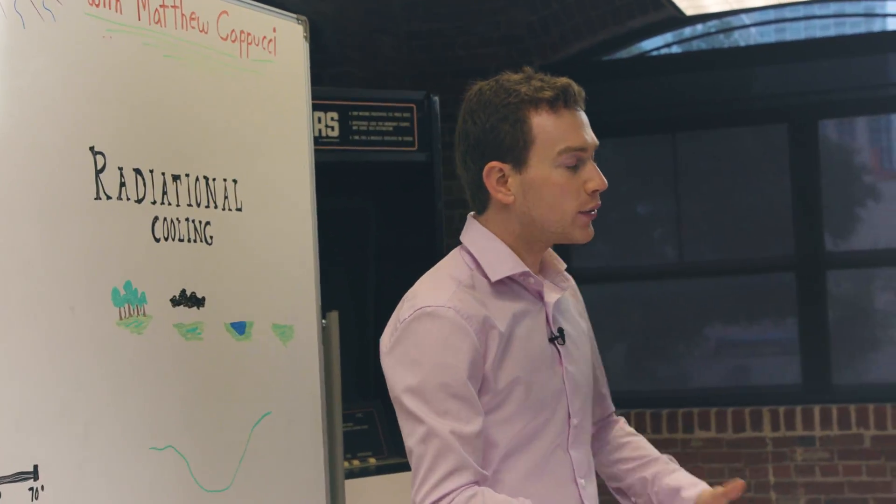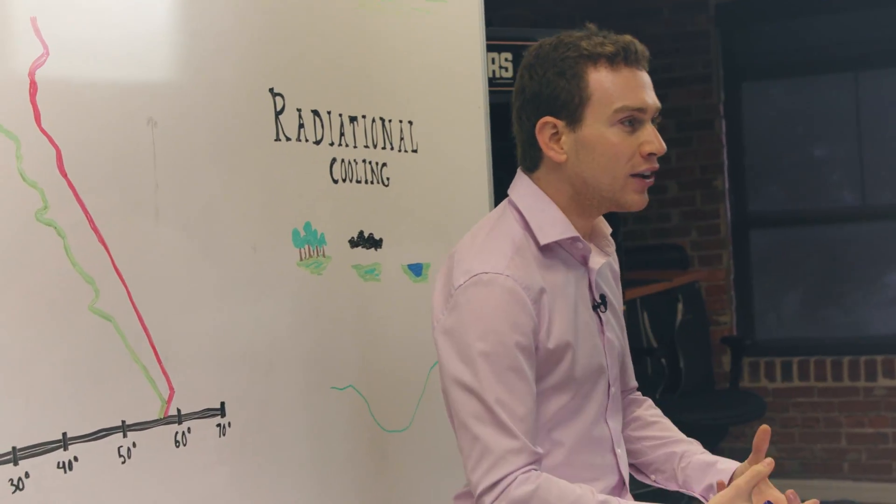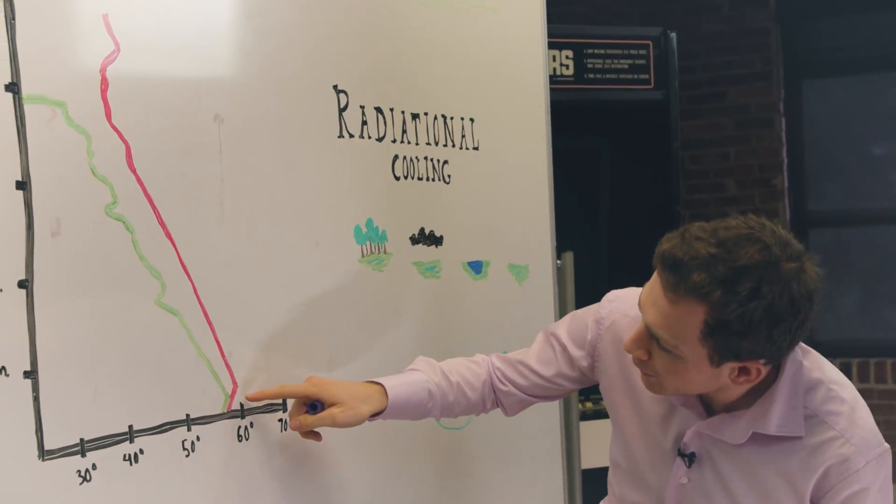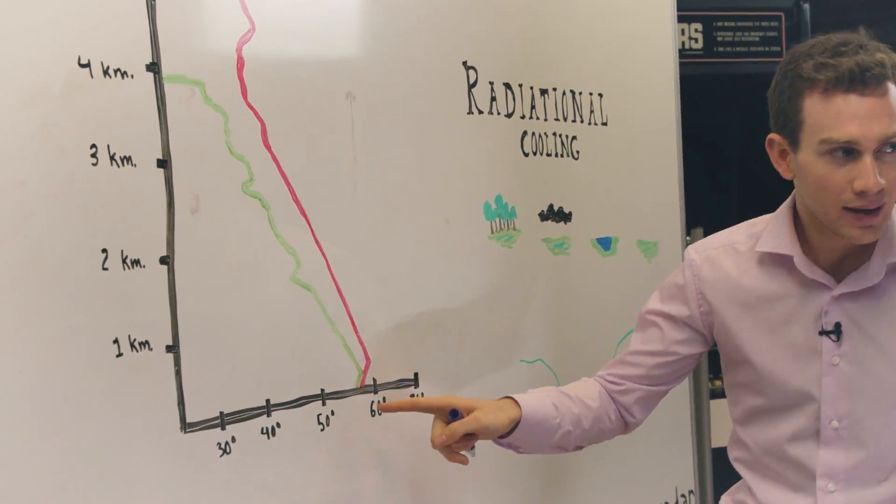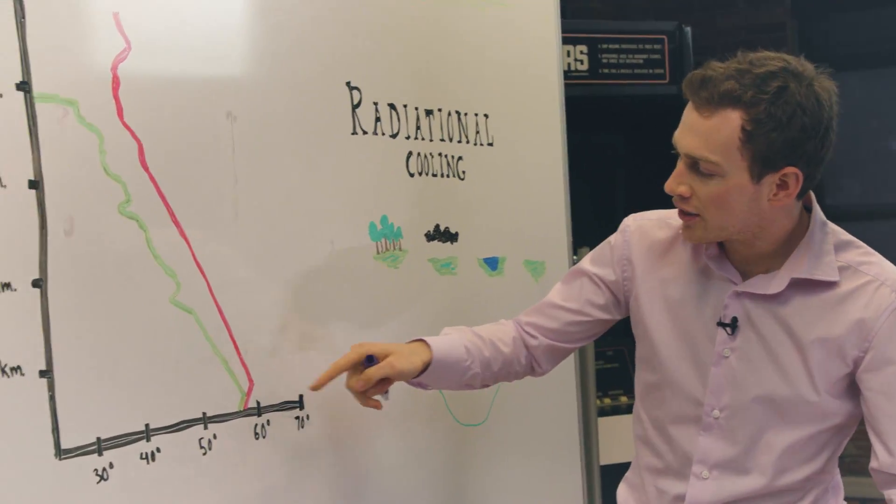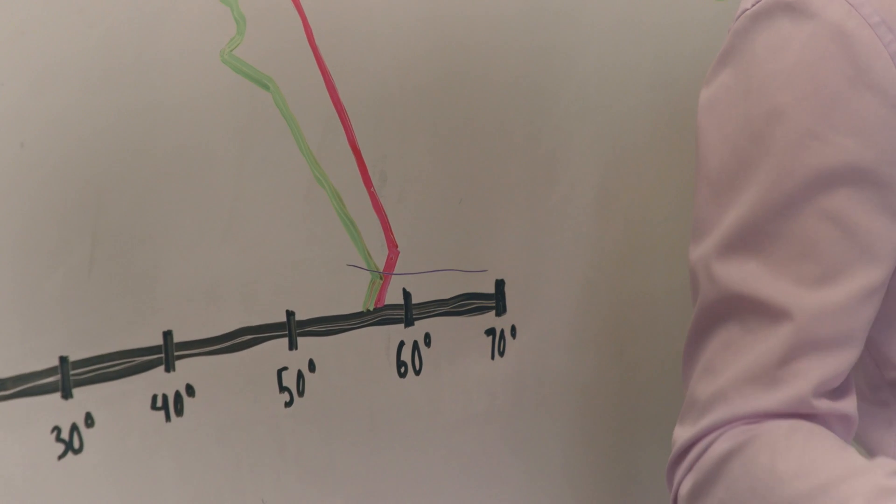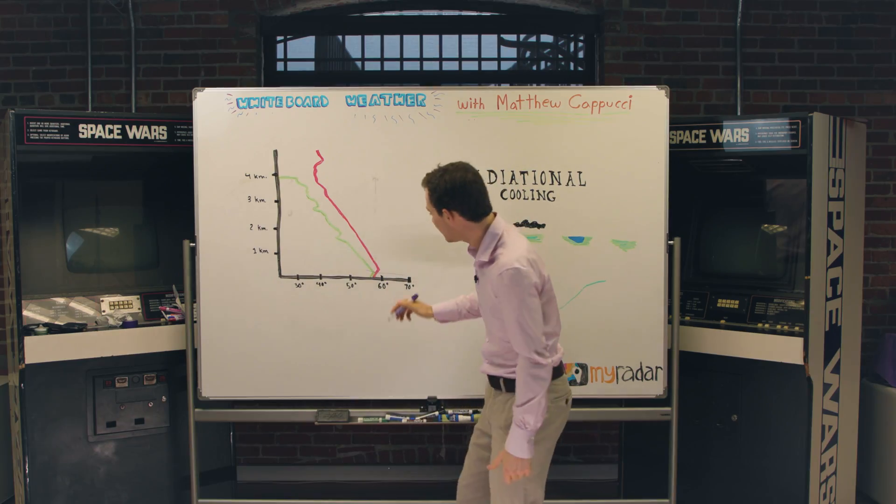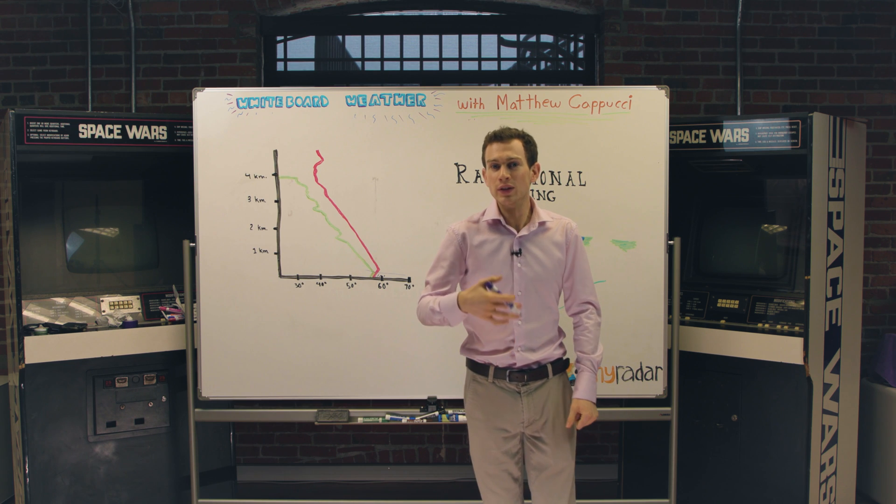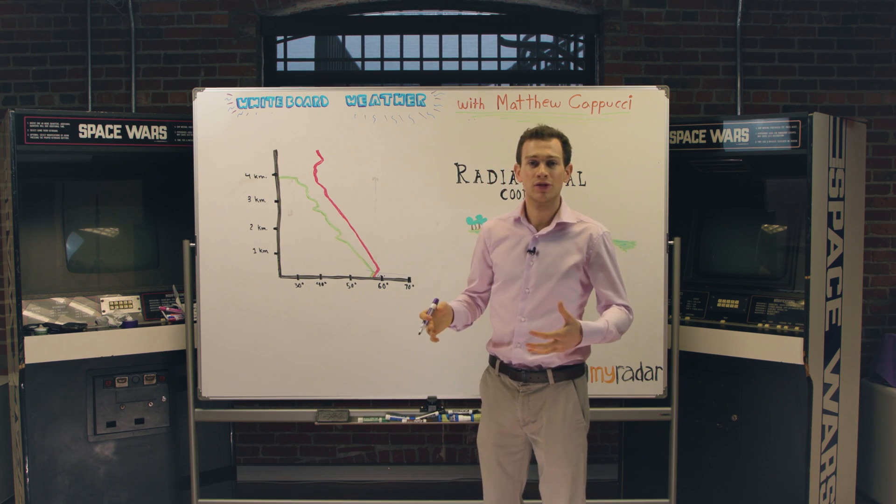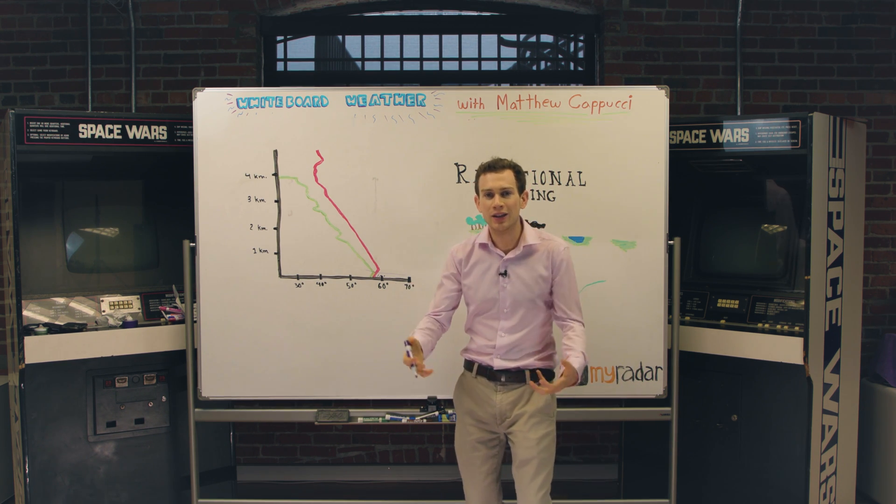Sometimes at the surface you get something called radiational cooling, where the ground actually cools faster than the air above it. That's why you'll notice the temperature right at ground level is actually less than just above. And that's why down here the temperature has fallen to the dew point, so the air in this level down here is saturated. It's only right near the ground, however, and that's why oftentimes you see fog in valleys or right near ground level but not farther aloft.